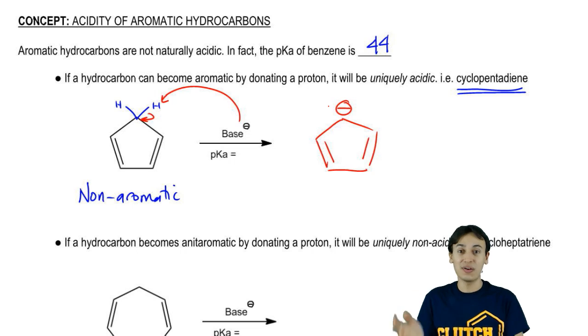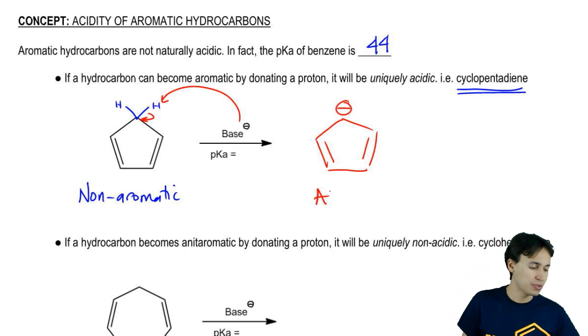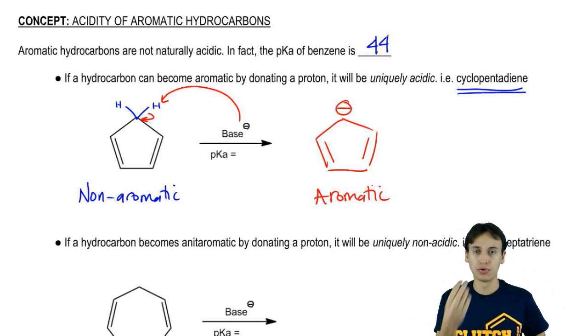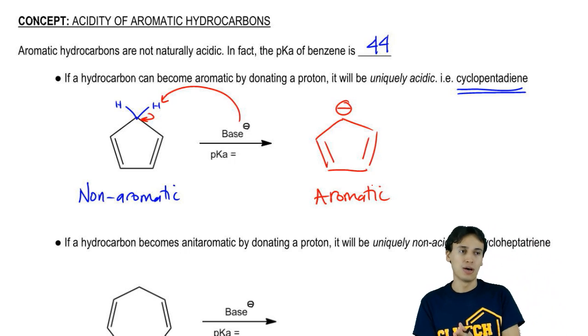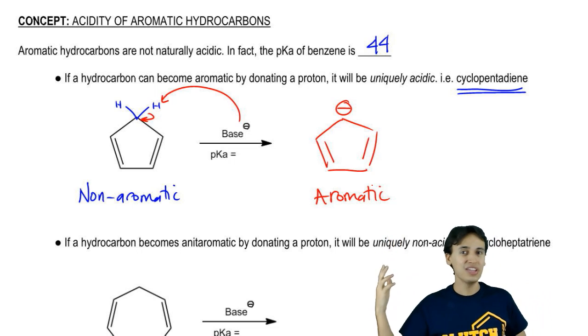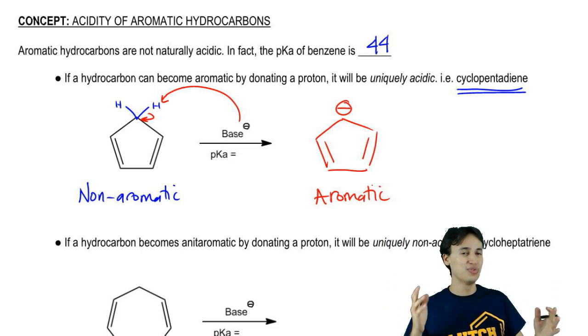Guys, this is aromatic. We learned about the four tests. We learned about Huckel's rule. This would be an aromatic molecule. Now, the definition of a good acid is that after donating a proton, it becomes a stable conjugate base. Would you say that this conjugate base is pretty stable? Hell yeah, it's aromatic. Aromatic molecules are awesome at being stable. That's what they do the best.